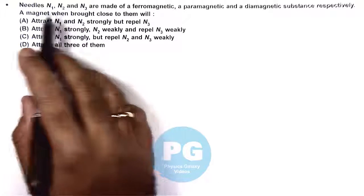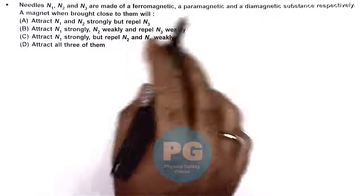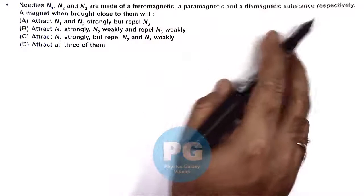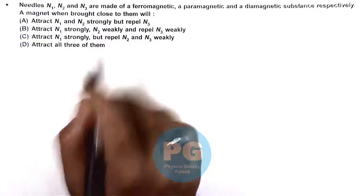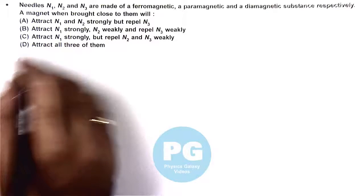In this question it says needles N1, N2, and N3 are made of ferromagnetic, paramagnetic, and diamagnetic substances respectively. And a magnet when brought close to them, we need to check what happens to the needles.